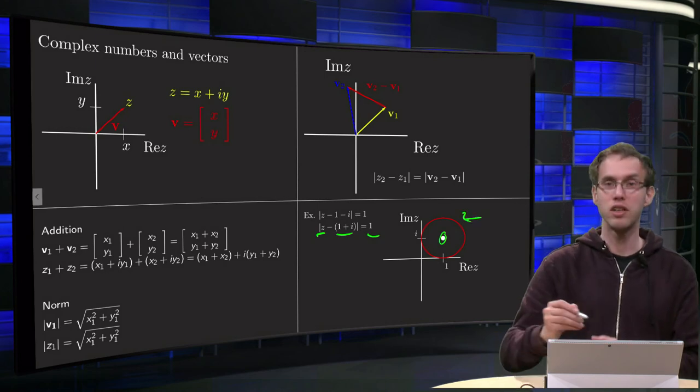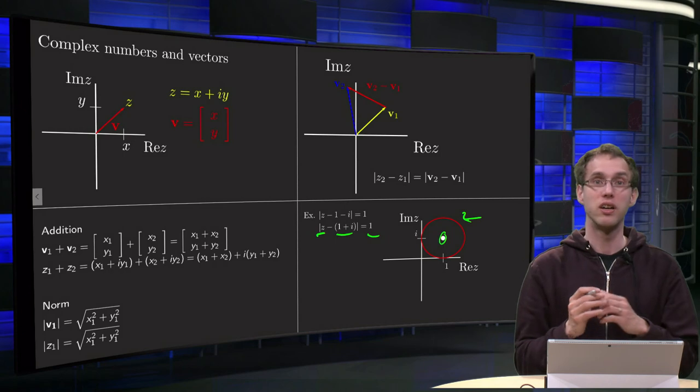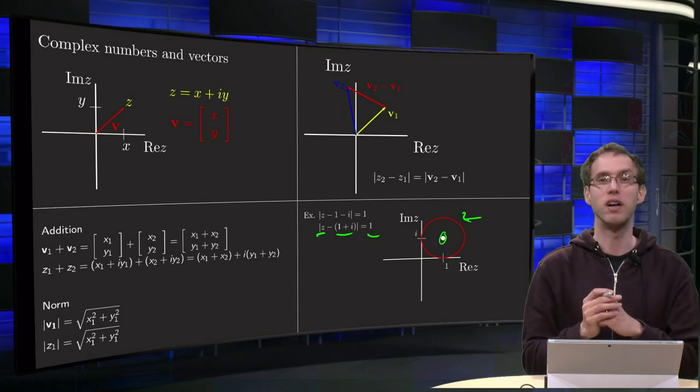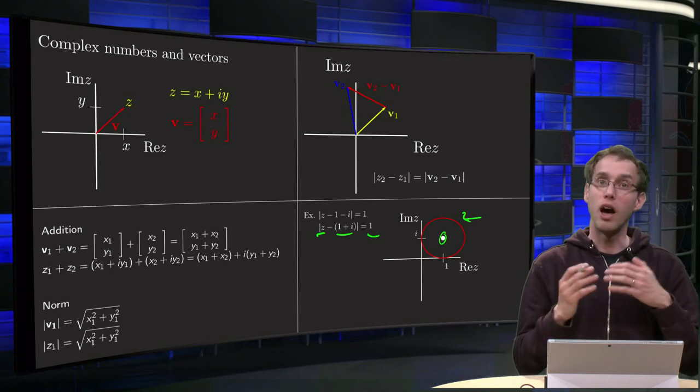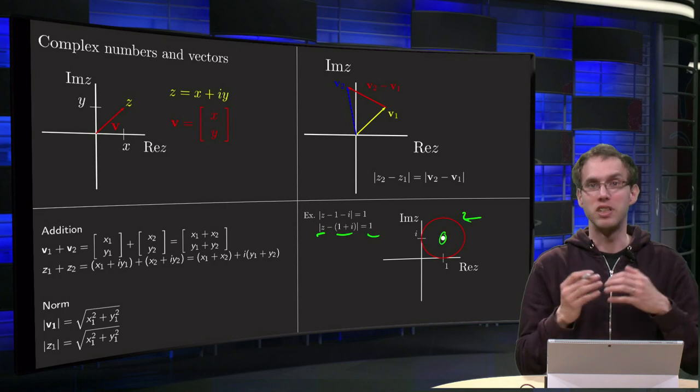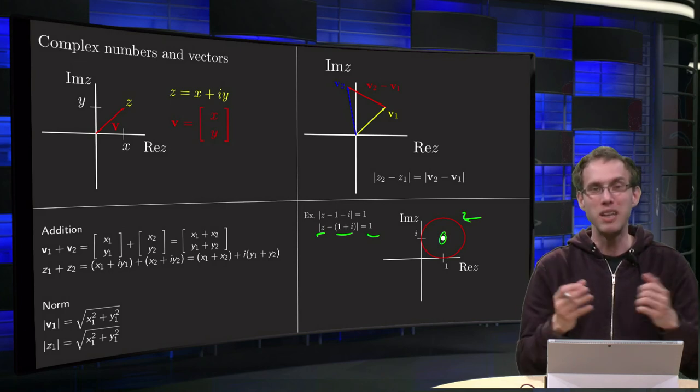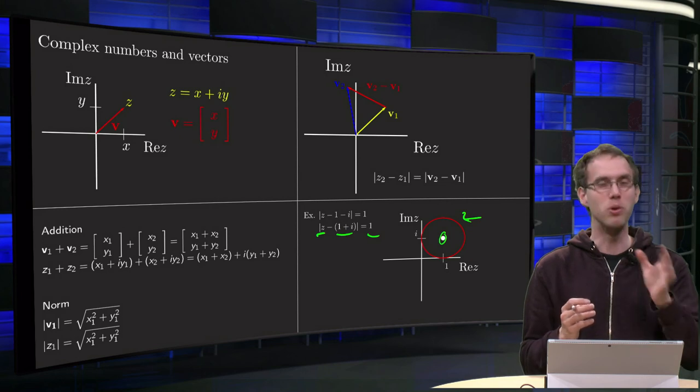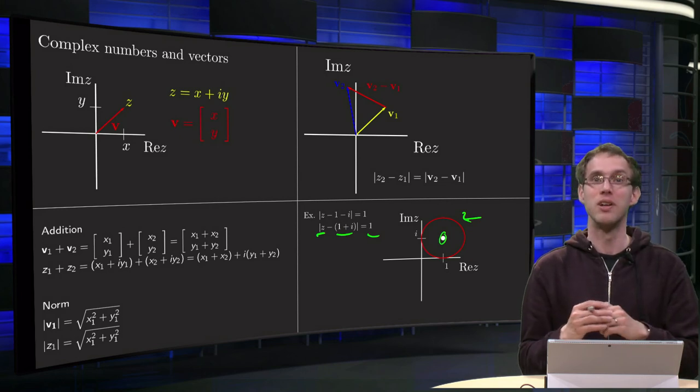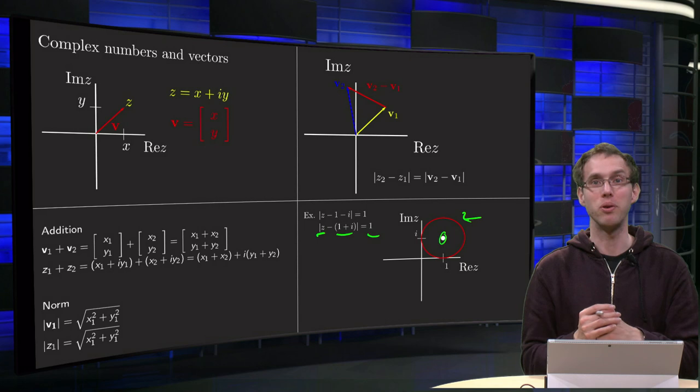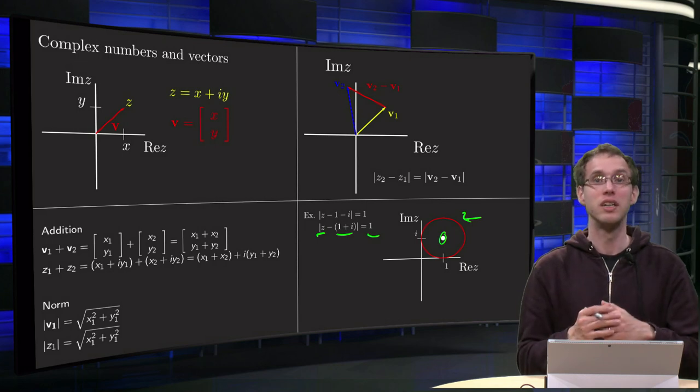So that is where all the points are satisfying the equation norm of z minus 1 minus i equals 1, which is a much nicer view, a much nicer way to solve this exercise than just brutally work everything out. So, this is an example of how you can view complex numbers geometrically.